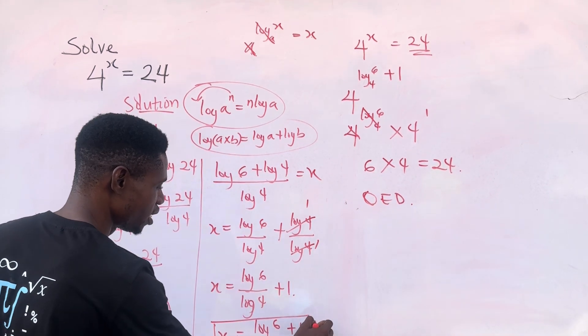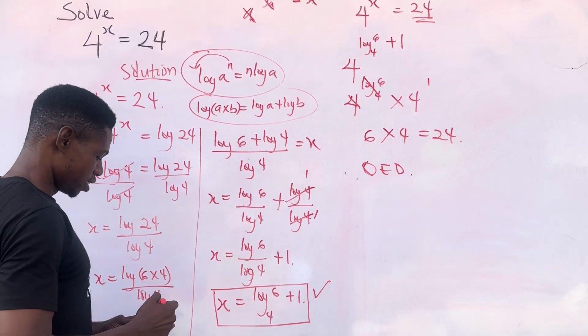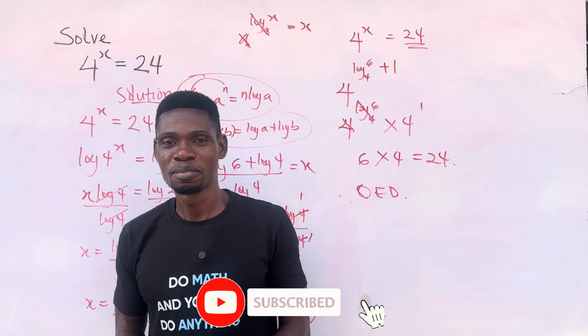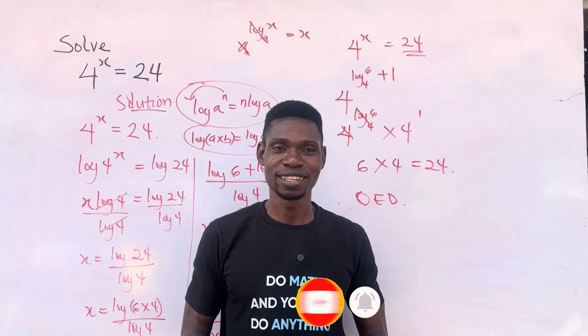So our x is actually log 6 base 4 plus 1. Yeah, an interesting one. I remain El Sam. Don't forget to subscribe to this channel to keep getting interesting solutions to mathematical problems.